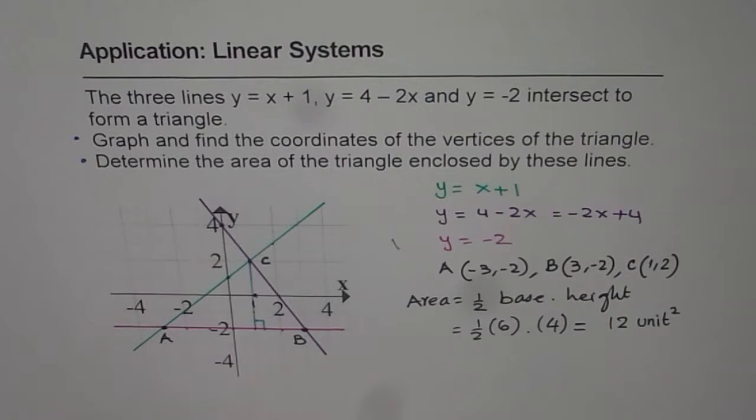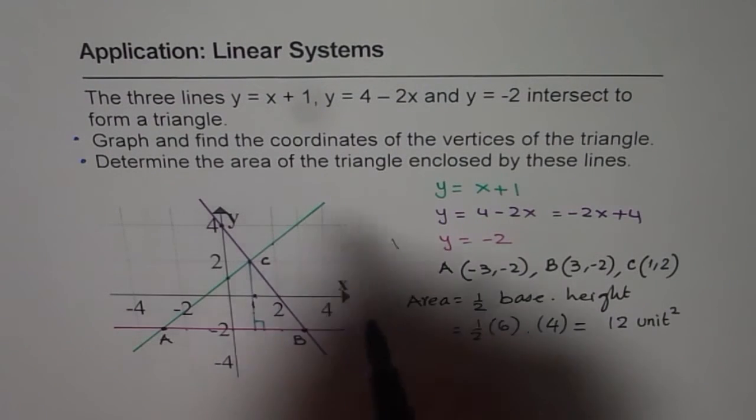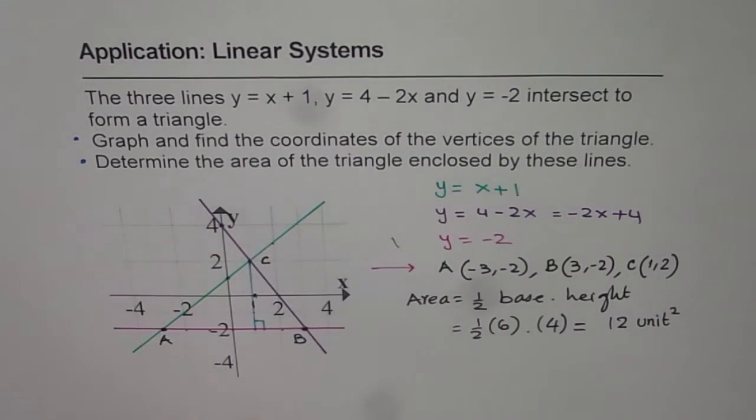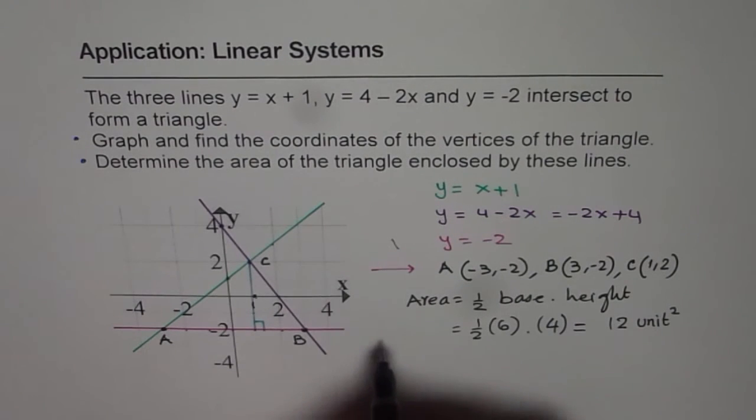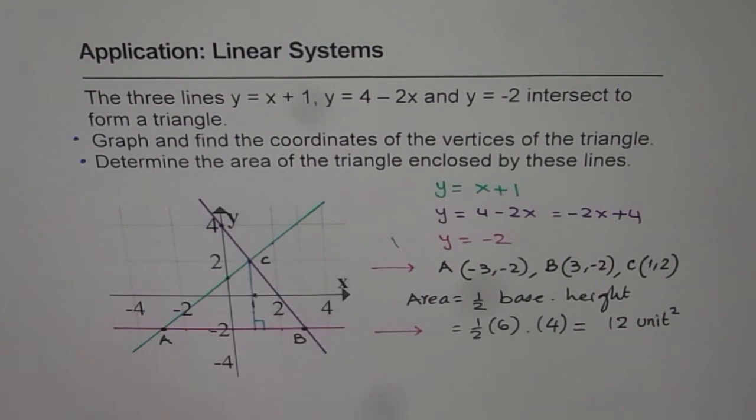So from the graph, it's kind of easy to read all this information. So I hope you appreciate it. So we have both the answers here. The first one is right there, the vertices of the triangle ABC. And the second one, the area of the triangle. Thank you.